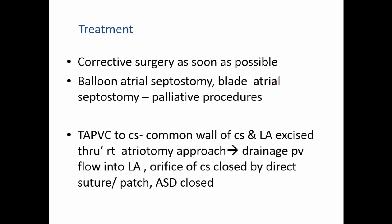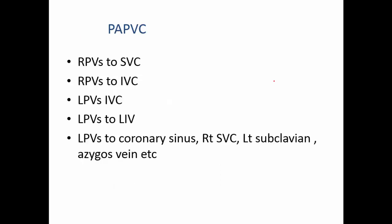In partial anomalous pulmonary venous connection the pulmonary veins can connect anywhere — right pulmonary veins to the SVC or IVC, left pulmonary vein to the IVC, left innominate, or coronary sinus. Literally any combination is possible. It's much more common than TAPVC and very often these patients won't be picked up in infancy at all — they can be quite well as infants.